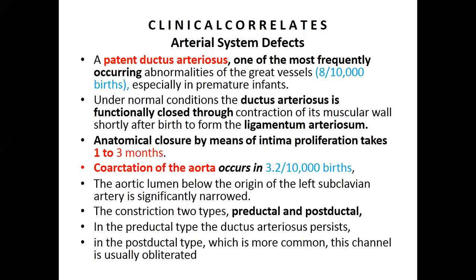Under normal conditions, the ductus arteriosus functionally closes through the contraction of its muscular wall shortly after birth to form the ligamentum arteriosum. Anatomical closure by intima proliferation takes place within one to three months. In premature infants, the ductus arteriosus may remain patent — this is one of the causes of patent ductus arteriosus.